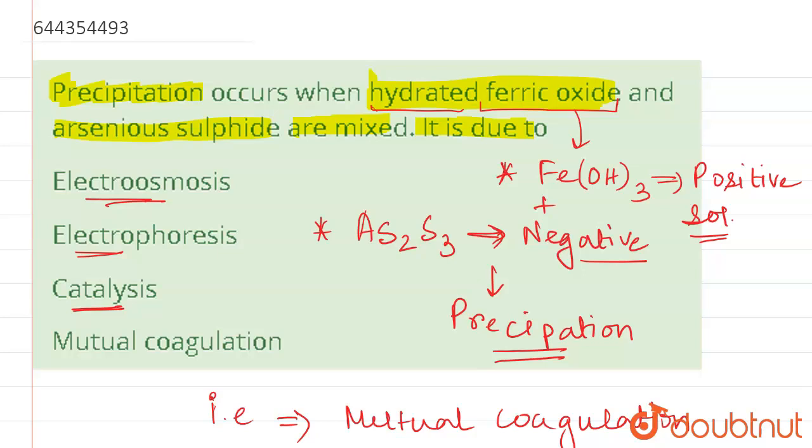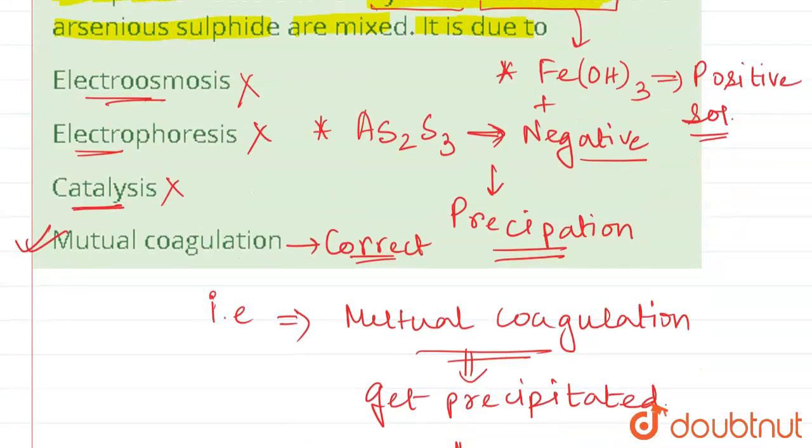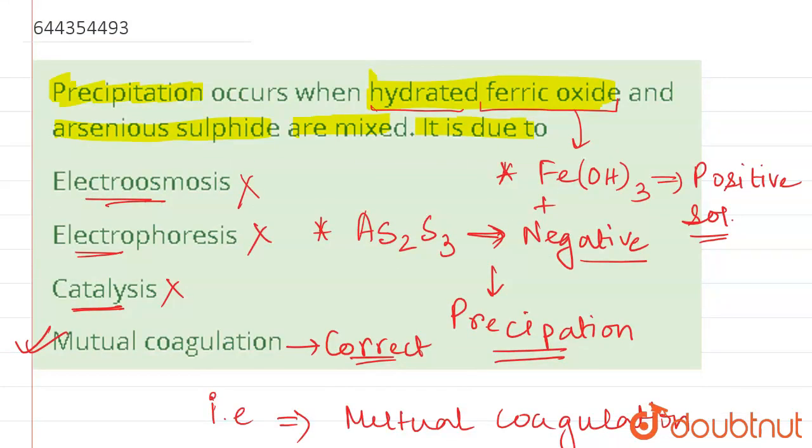So only correct option is option four, that is mutual coagulation. Here we see that there is a positive salt and there is a negative salt. When this positive and negative salt come together, come closer, it will neutralize each other and form a precipitation. So I hope this answered your question. Thanks.